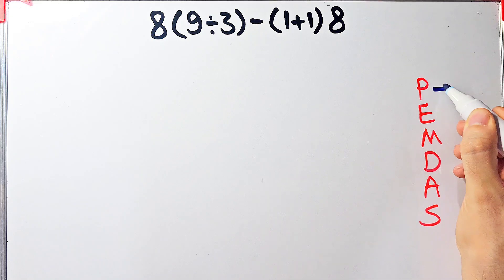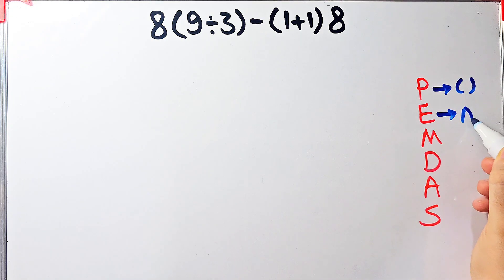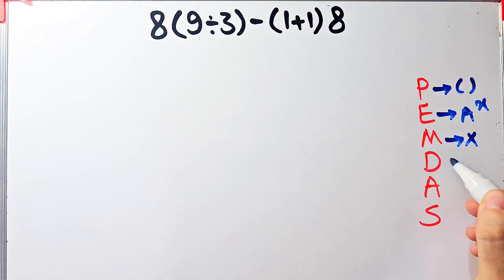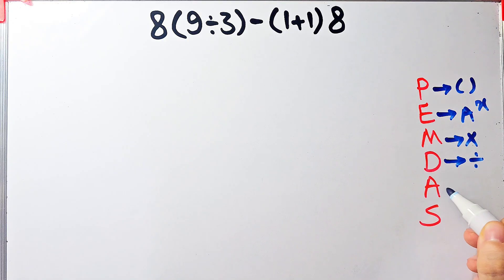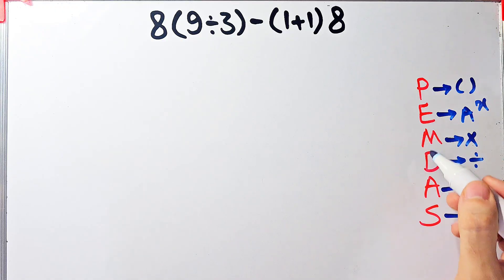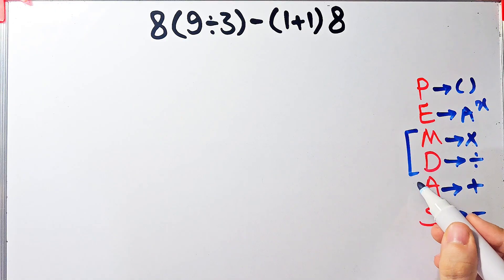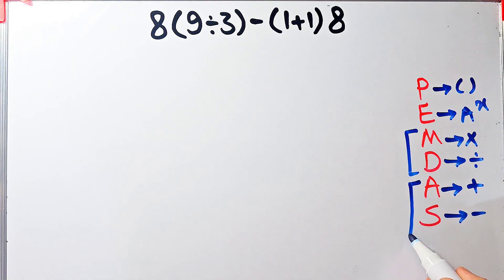In this rule: P stands for parentheses, E stands for exponent, M stands for multiplication, D stands for division, A stands for addition, and S stands for subtraction. Multiplication and division have the same level of priority, and addition and subtraction also have the same level of priority.